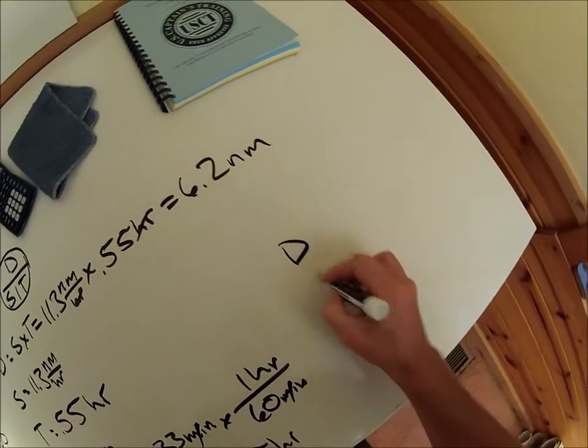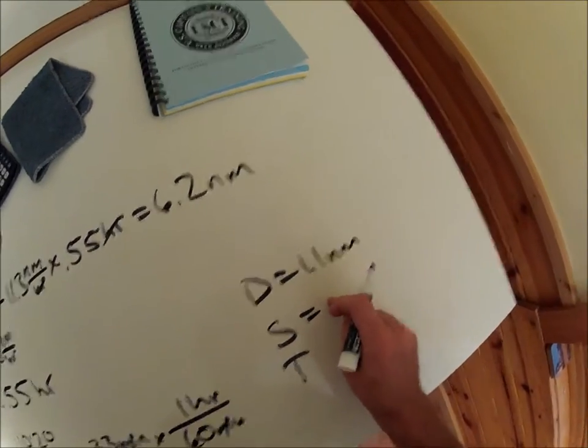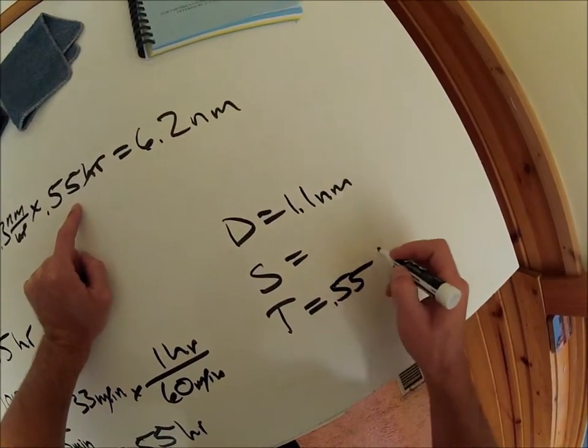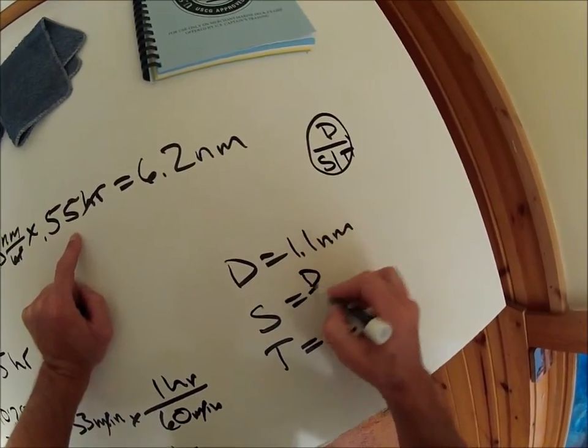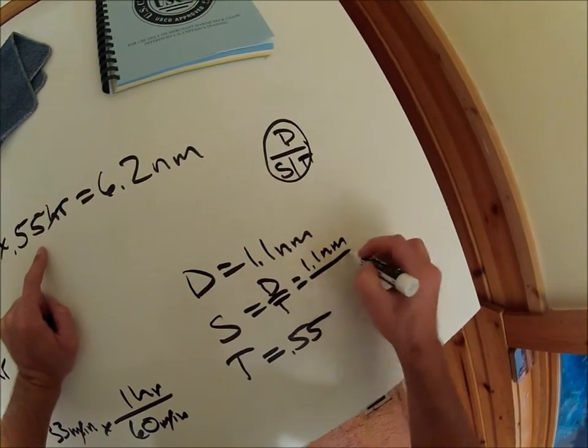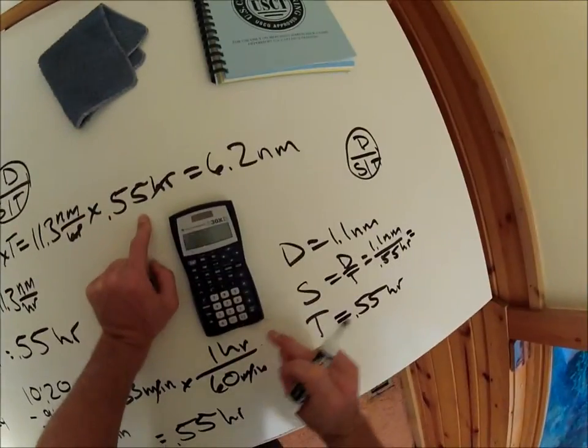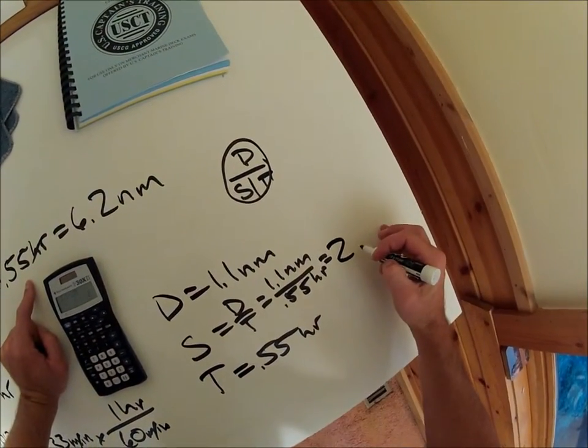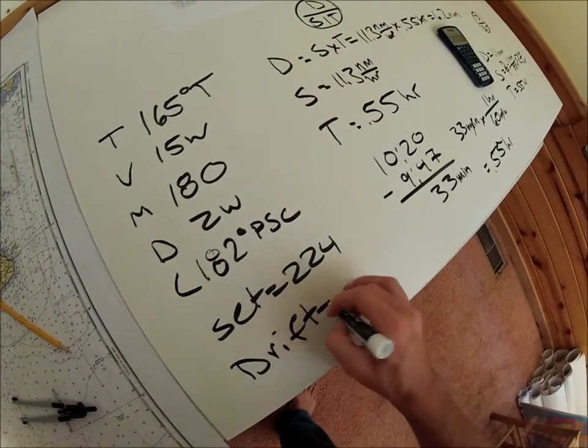And our drift, so we got this distance, and we got pushed this distance in a time to get a speed. This distance is 1.1, so we need to do another D street problem. Distance, speed, time. Our distance we said was 1.1 nautical miles. We're looking for a speed which is drift. Our time is the same time we got pushed that far in 0.55 hours. Speed, D street: speed equals distance over time, 1.1 nautical miles in 0.55 hours equals 1.1 divided by 0.55 equals 2 nautical miles per hour. So our drift is equal to 2 knots.